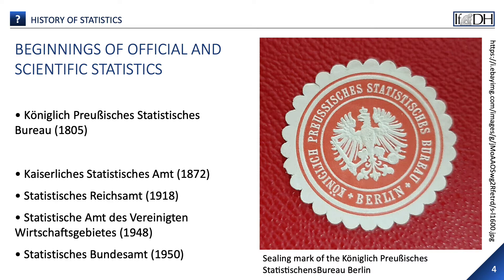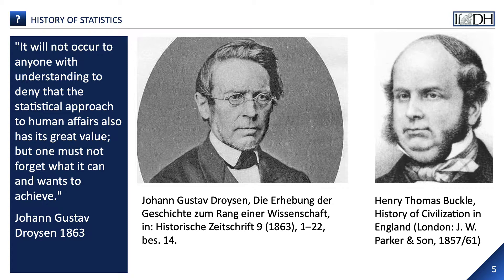Parallel to this, statistics was also increasingly pursued scientifically and taught at universities, so that the methods of statistical analysis now also had a theoretical basis. Since the end of the 19th century at the latest, statistics has thus become a scientific instrument for the acquisition of social factors, characteristics and opinions, which is intended to place the formation of wills and decision-making on a solid basis. Therefore, it is no longer just the population that is surveyed, but society as a whole in all its facets of economic, social and cultural life. Quantifying methods have since become a fundamental part of research in economics, political science and the social sciences.